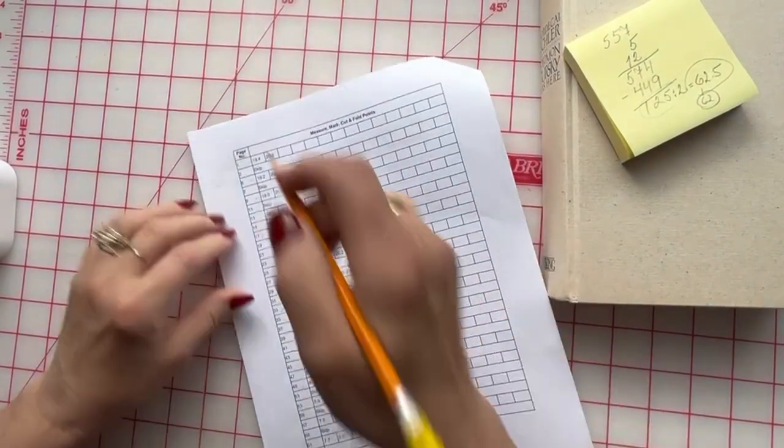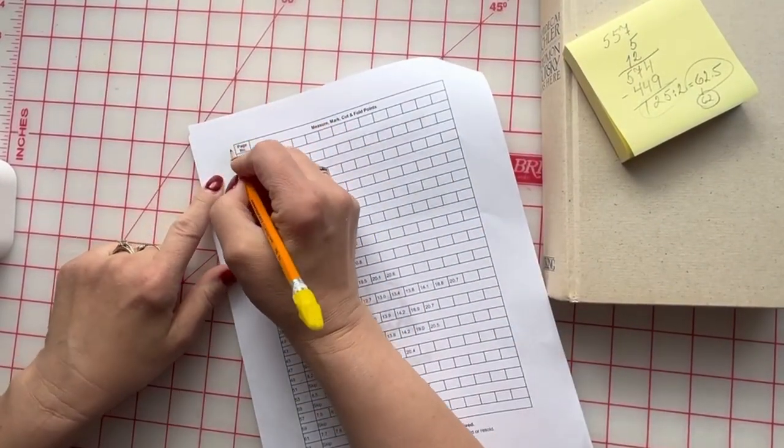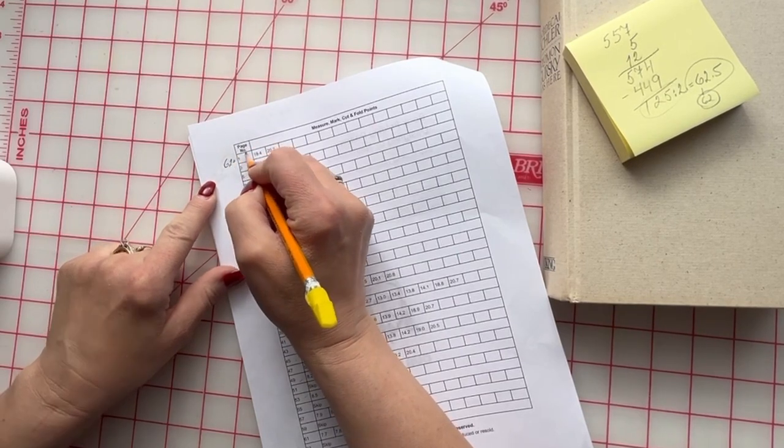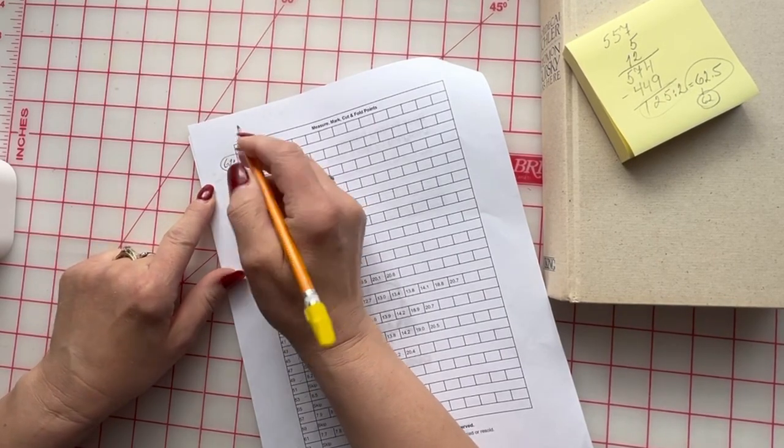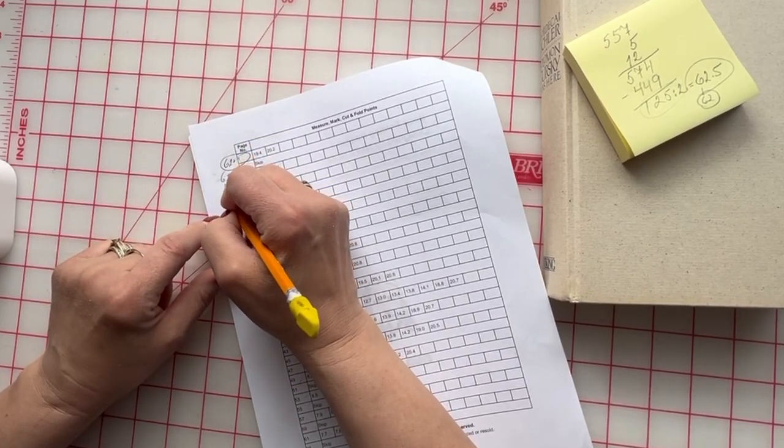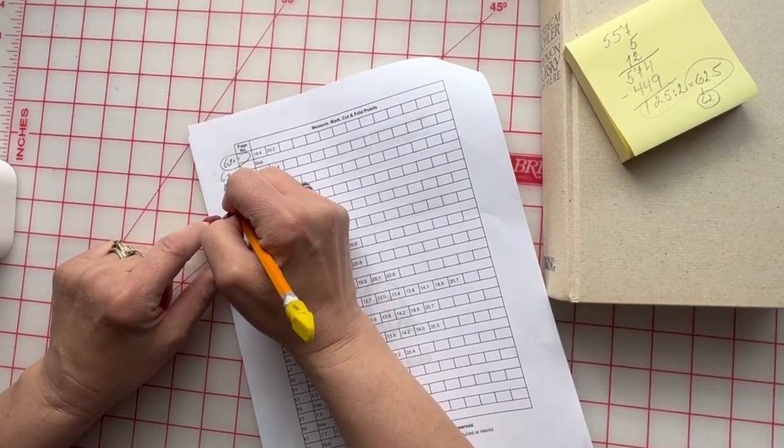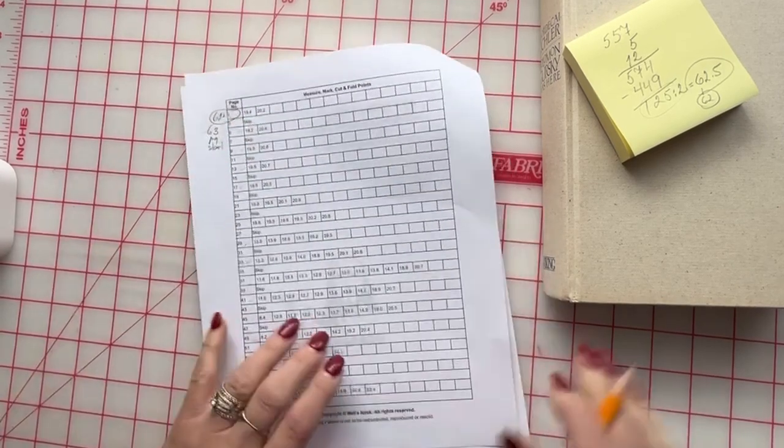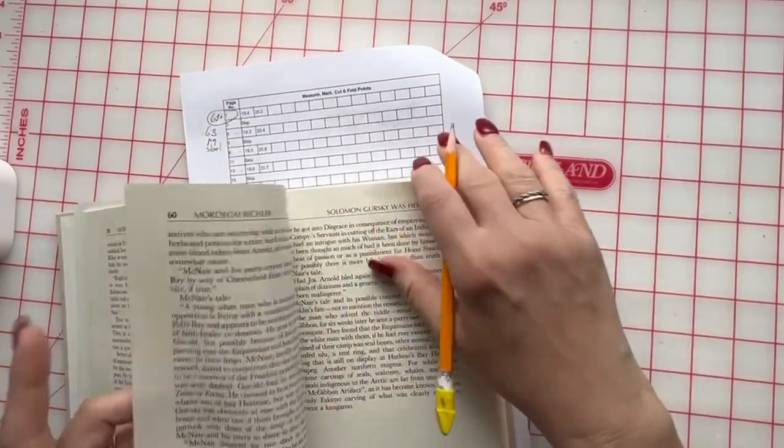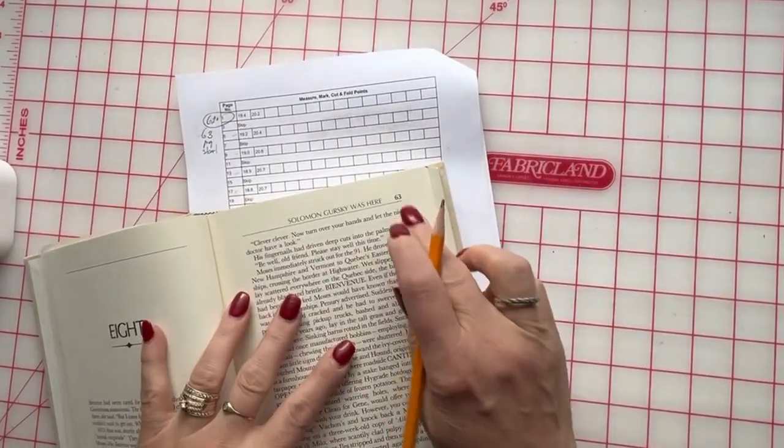So if my number is 62, I have to put it right here. 62 plus my number page is one, equals 63. So my starting page will be number 63. Start. So my pattern will be starting on page 63.